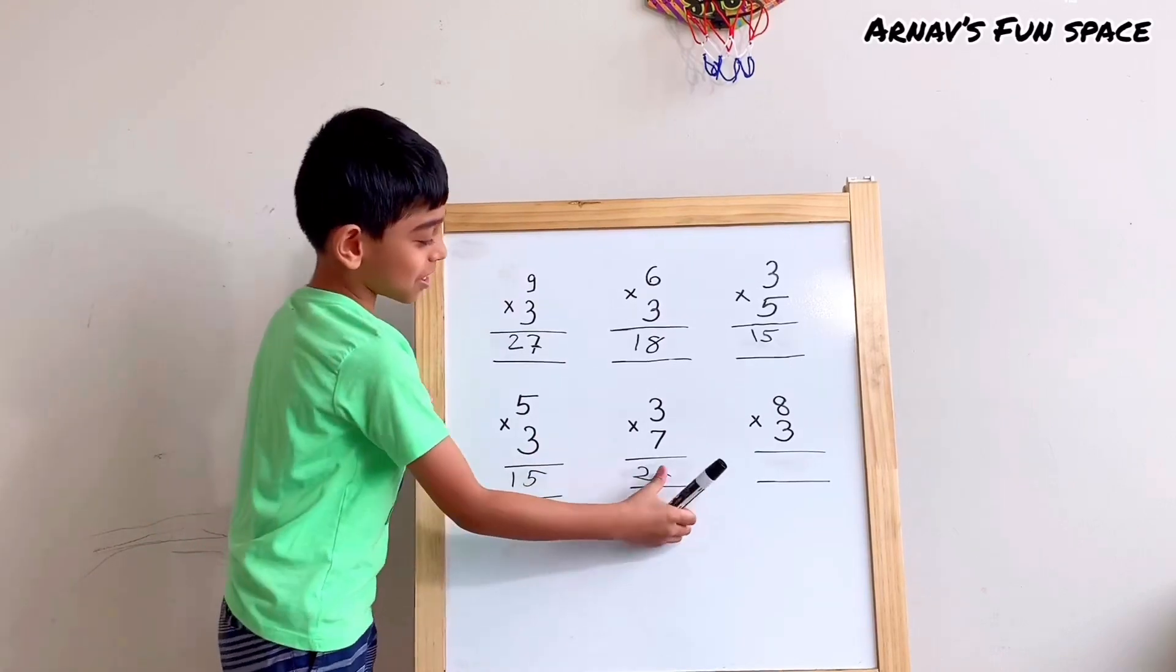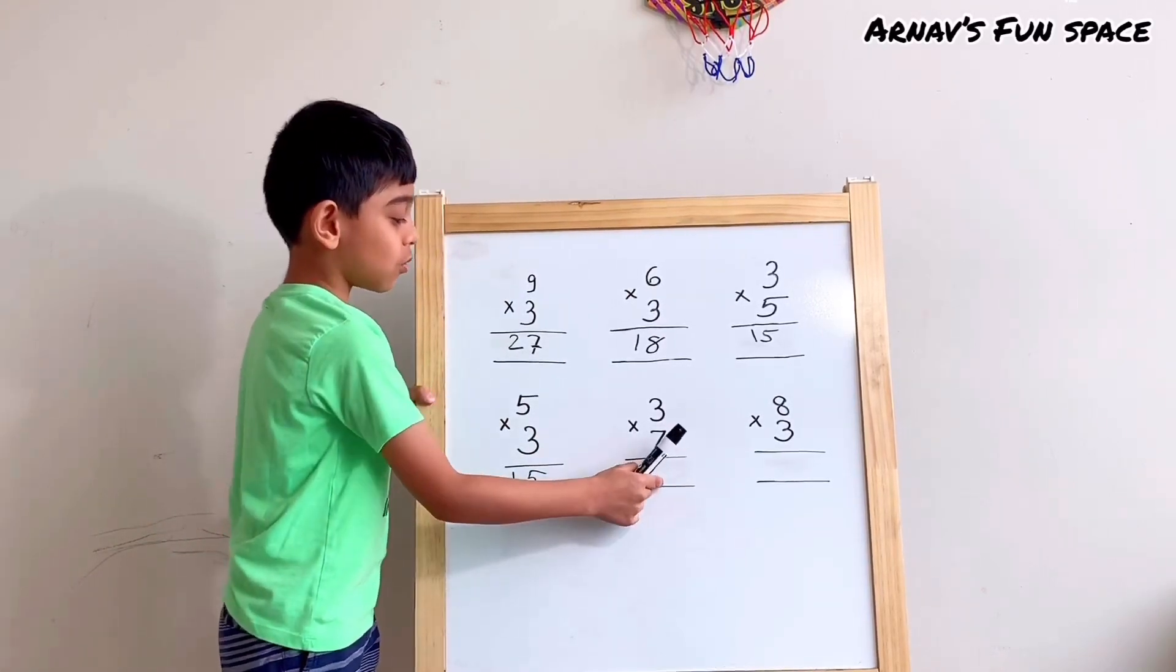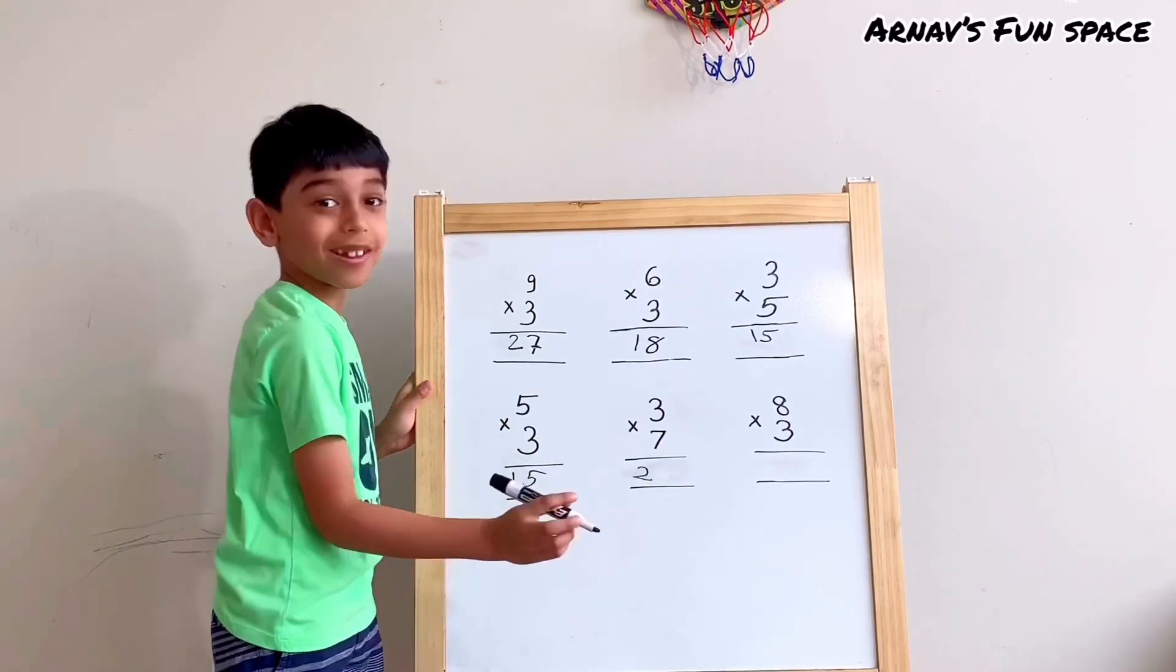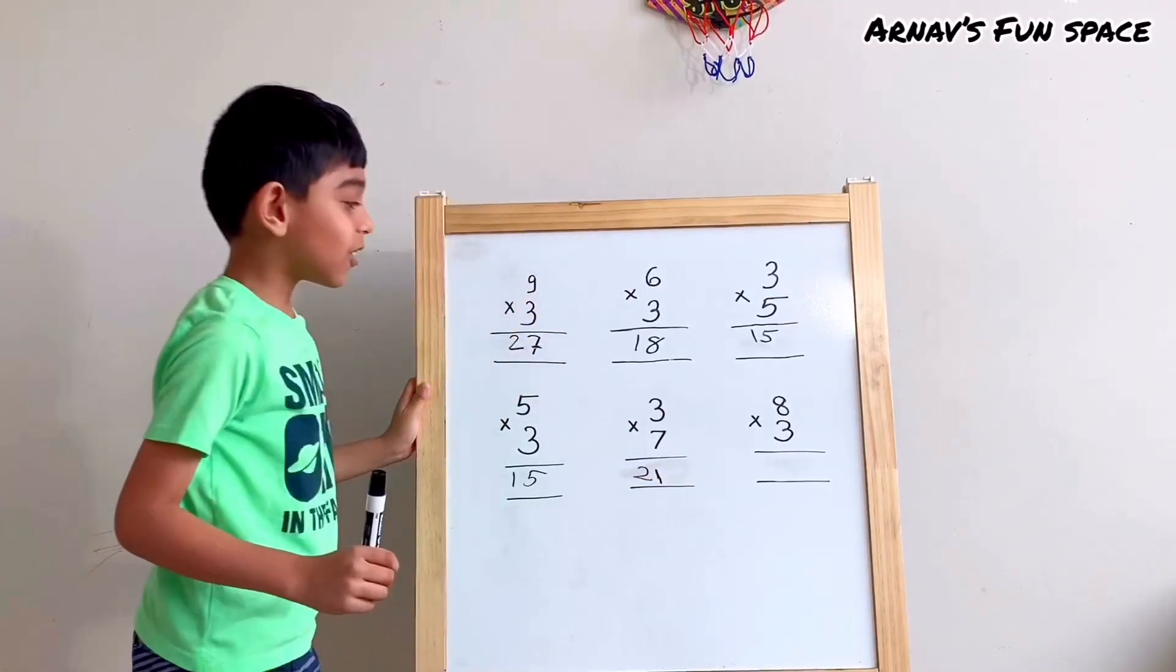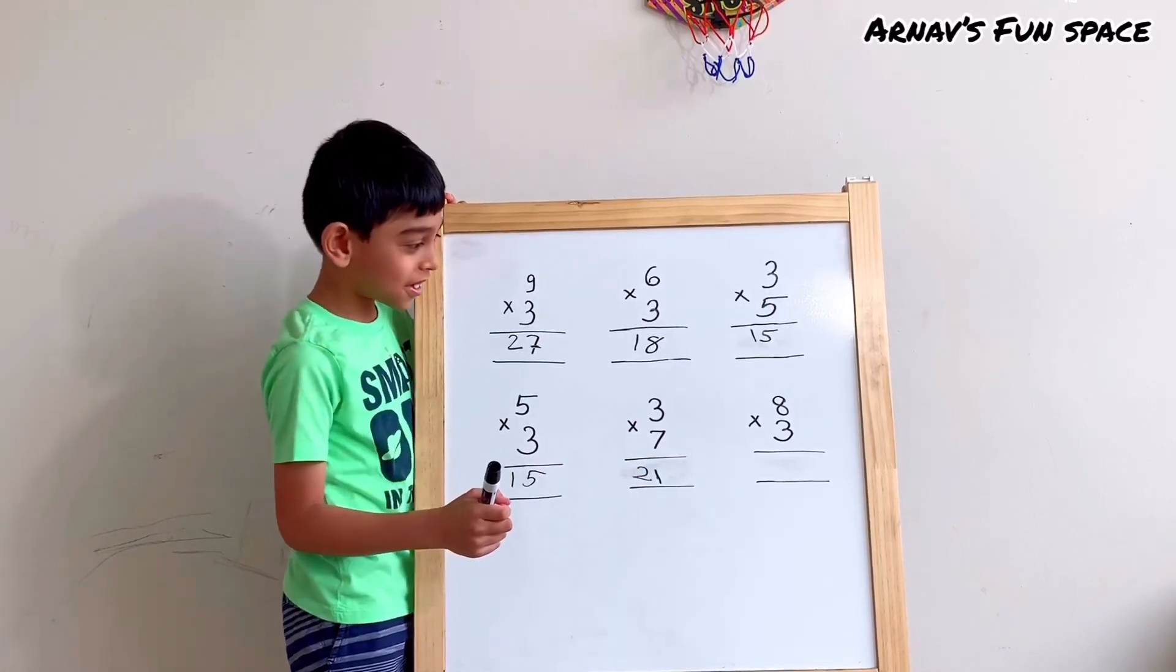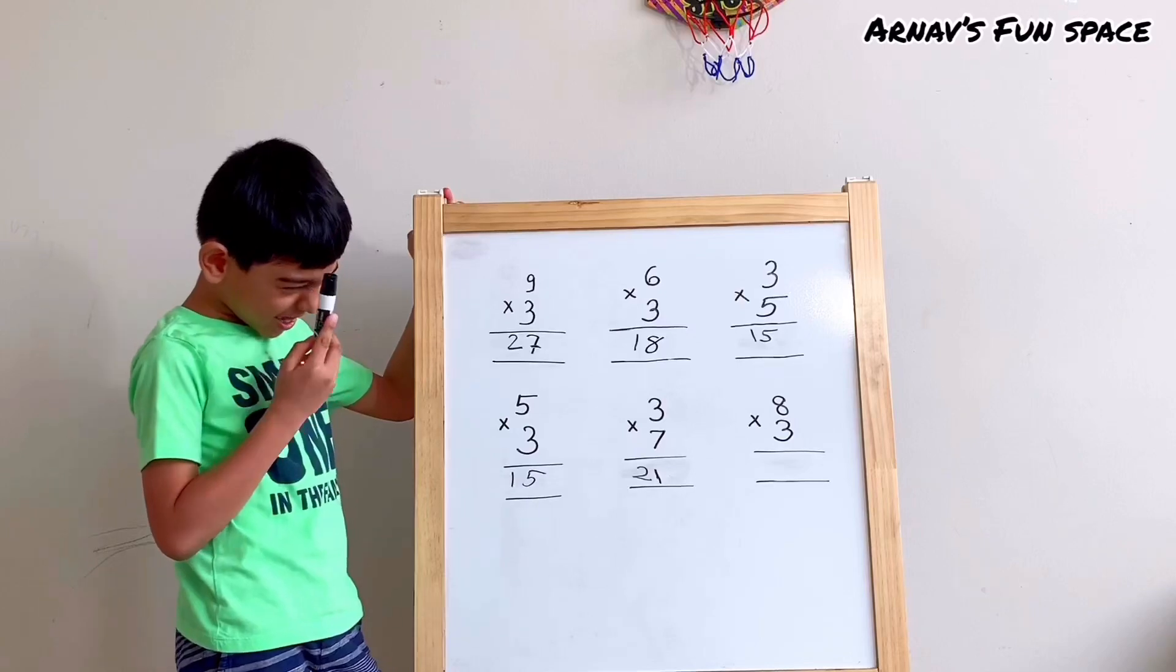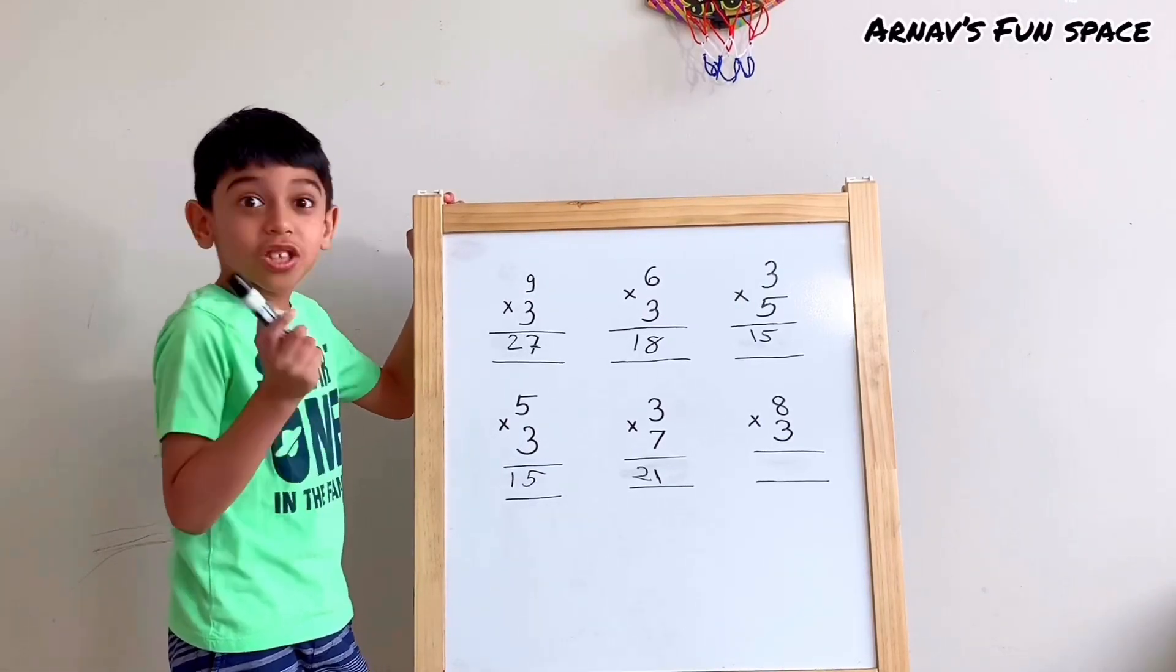Oh, I think there's something wrong in here. I think we have to make the 8. 21! 21! Alright, the next question is 8 times 3. 8 times 3? 8 times 3 is... Yeah, 24!